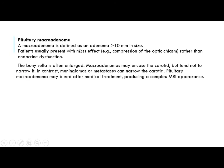Pituitary macroadenoma is an adenoma of more than 10 mm in size. Patients usually present with mass effect, such as compression of the optic chiasm, rather than endocrine dysfunction. The sella is often enlarged. The macroadenoma may encase the carotid but tends not to narrow it — unlike meningioma and metastasis, which cause narrowing. Pituitary macroadenoma may bleed after medical treatment, producing a complex MRI appearance.